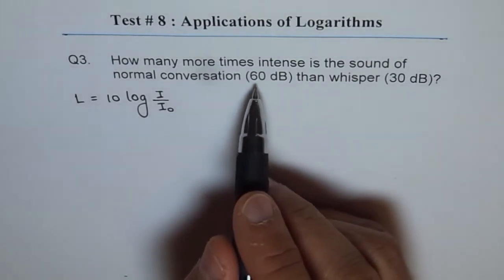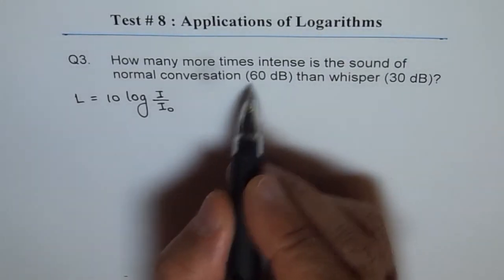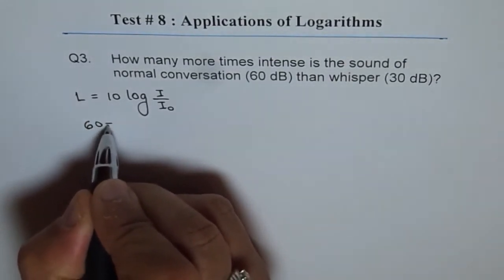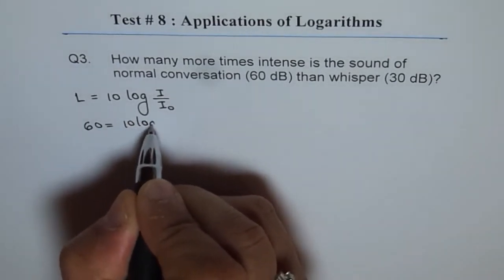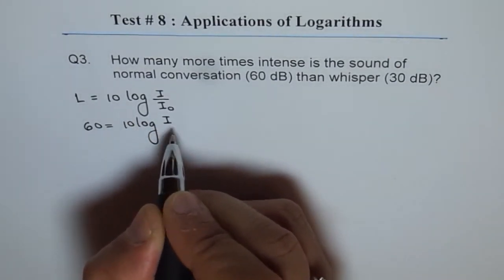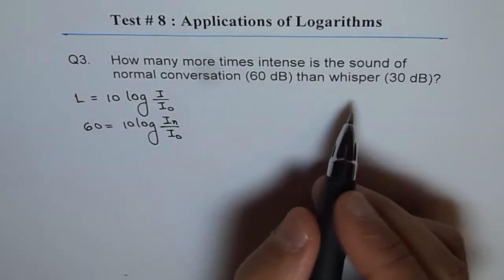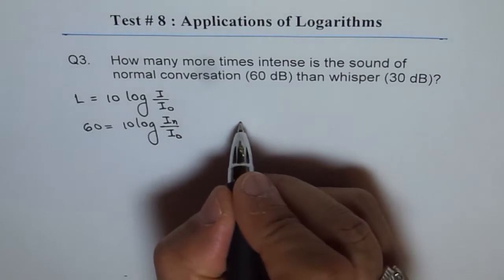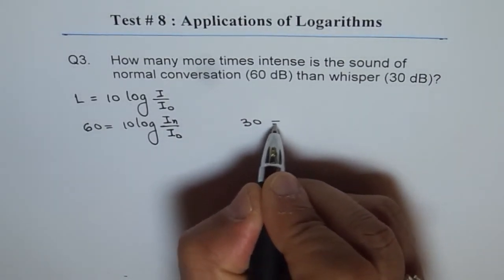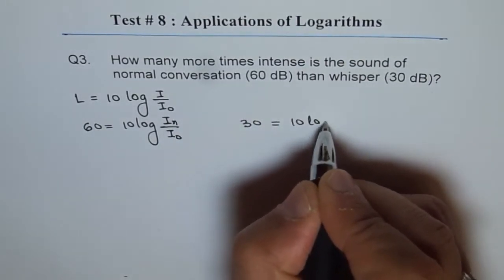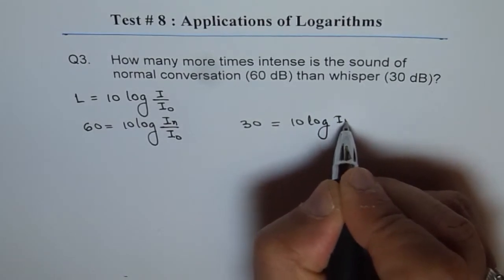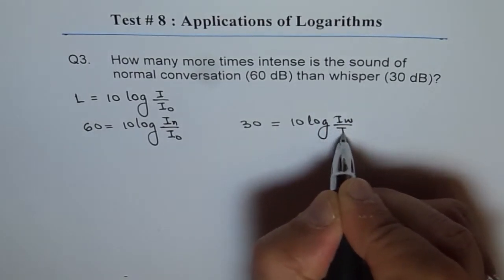So let us write down our equation for both. Let us say 60 equals 10 log IN for normal conversation over I0. And for whisper, I will write 30 equals 10 log I whisper over I0.